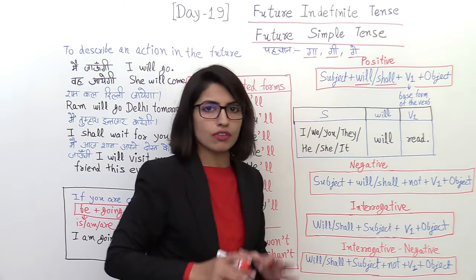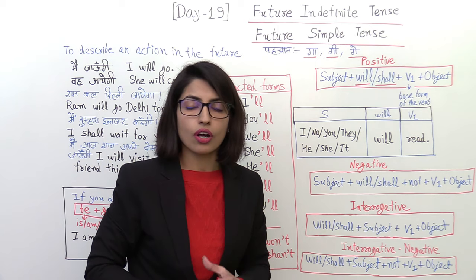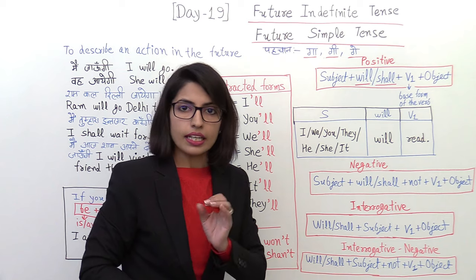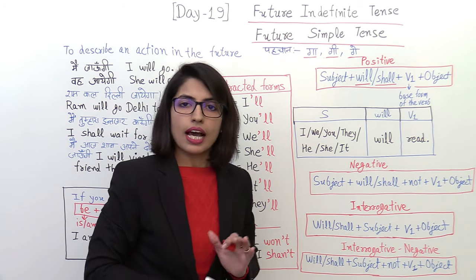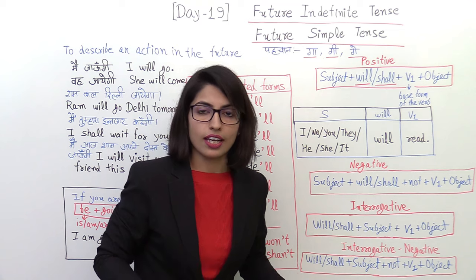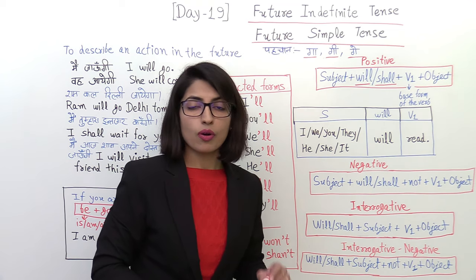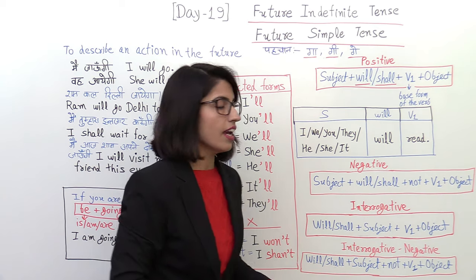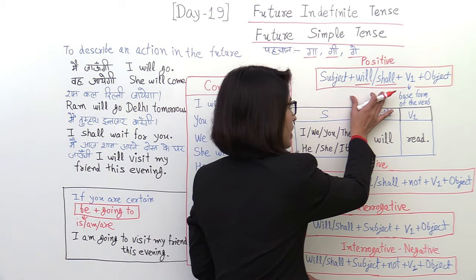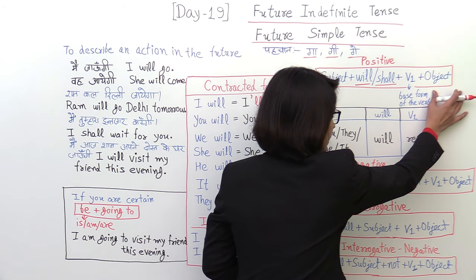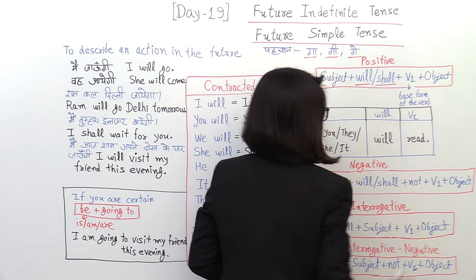What is the base form of the verb? The verb's actual form is the base form. Like go, went, gone. Go is the base form. Play, played, played. This is the base form. So you don't need to take the second and third form. Just use the base form of the verb. And the helping verb is also very simple: will or shall.